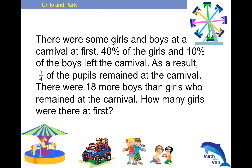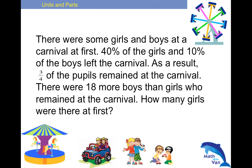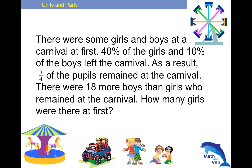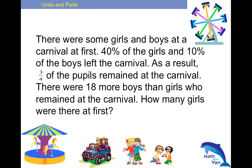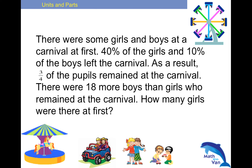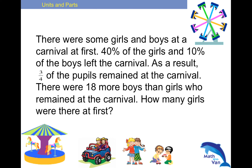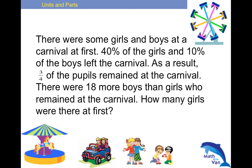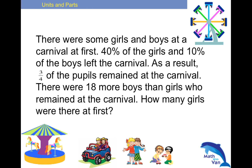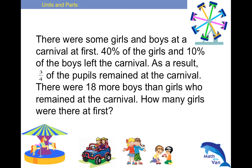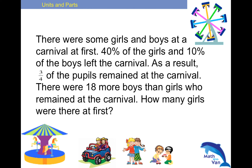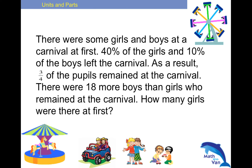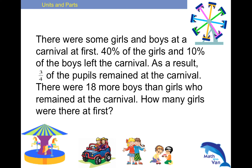Let's take a look at this question. There were some girls and boys at the carnival at first. 40% of the girls and 10% of the boys left the carnival. As a result, 3 quarters of the pupils remained at the carnival. There were 18 more boys than girls who remained at the carnival. So how many girls were there at first?